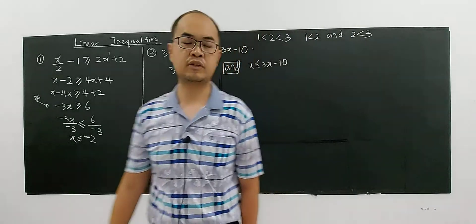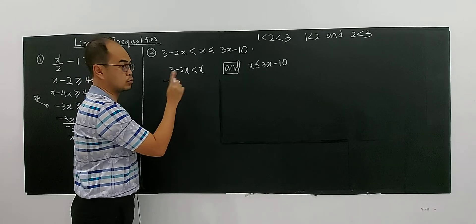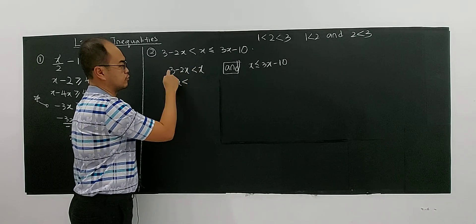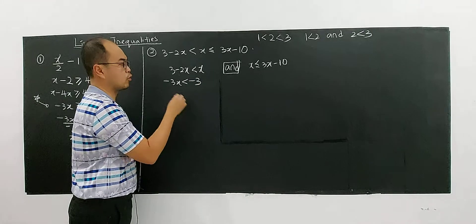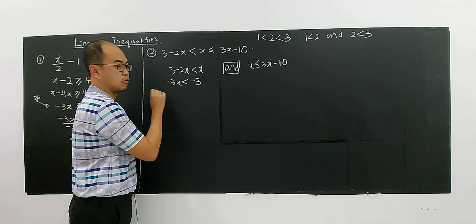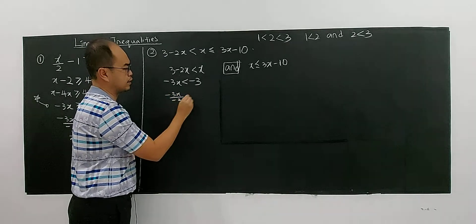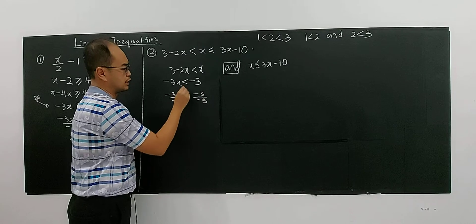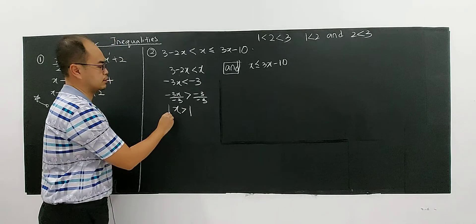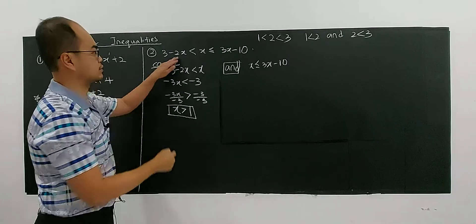Now you solve this equation. Bring the x to one side: you have negative 3x on the left. You don't change the sign here because you're just subtracting — negative 2x minus x gives negative 3x. So you divide by negative 3. Once you divide by a negative number, you change the sign of the inequality, giving you x greater than 1. This is Case 1: when 3 minus 2x is less than x.